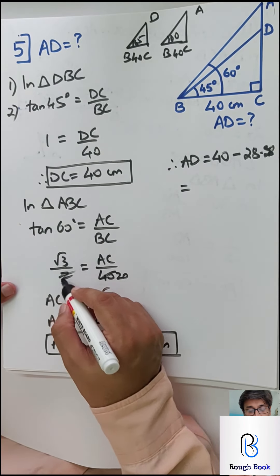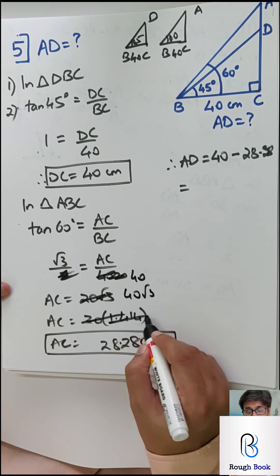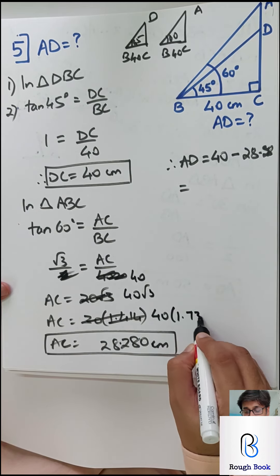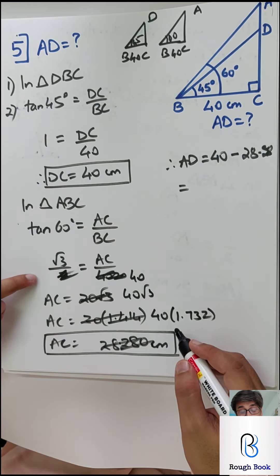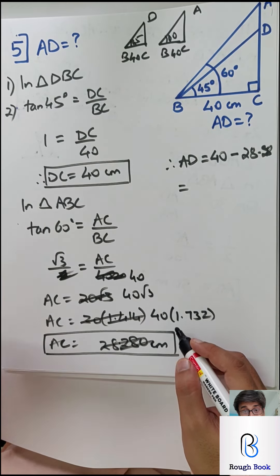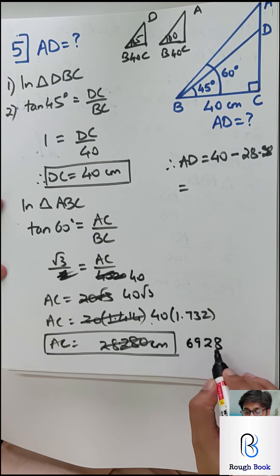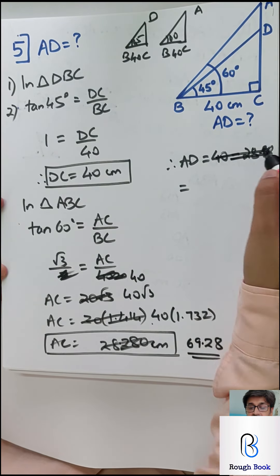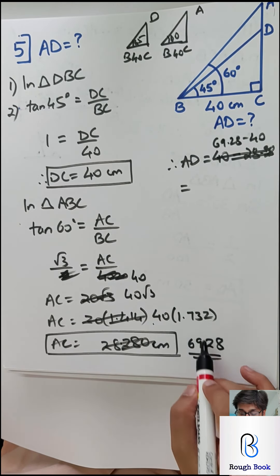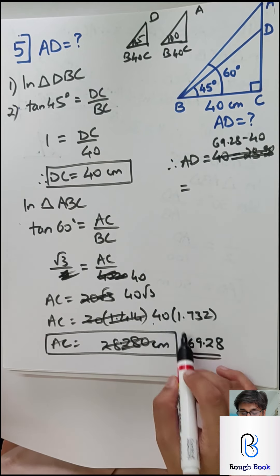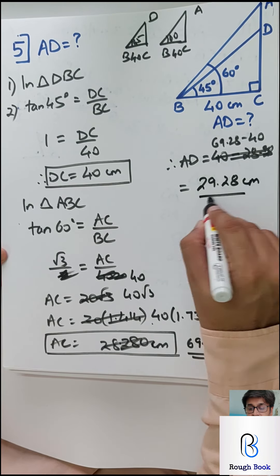The earlier value was wrong — tan 60 is root 3 only, not root 3 by 2. So AC becomes 40 root 3. 40 times 1.732 gives 69.28. Keeping the mistake visible so you learn not to repeat it.